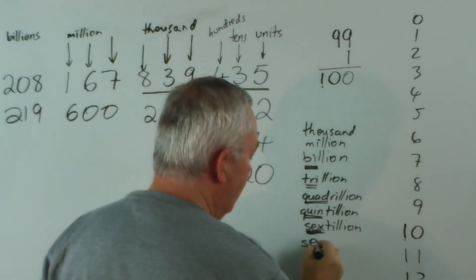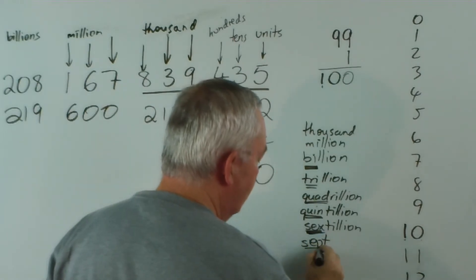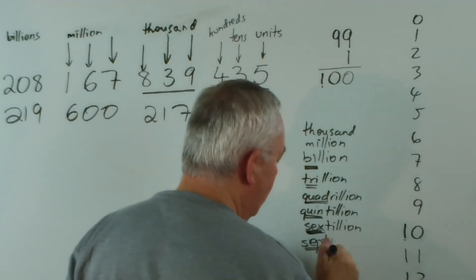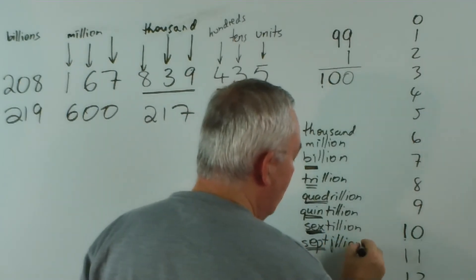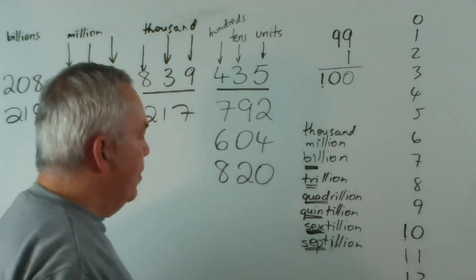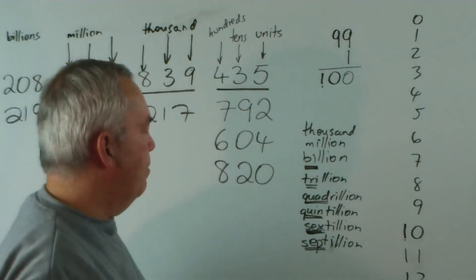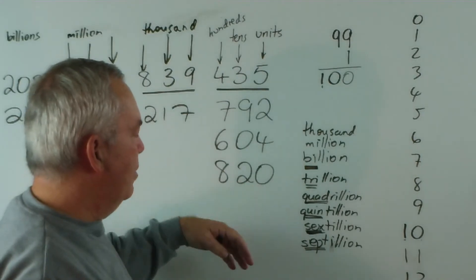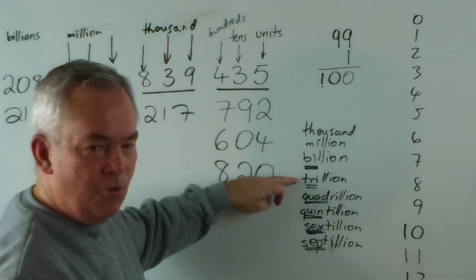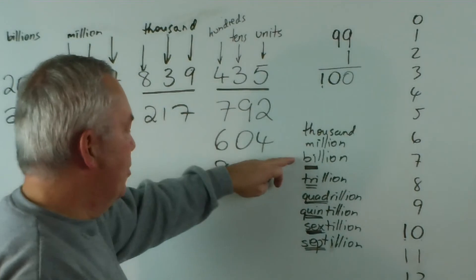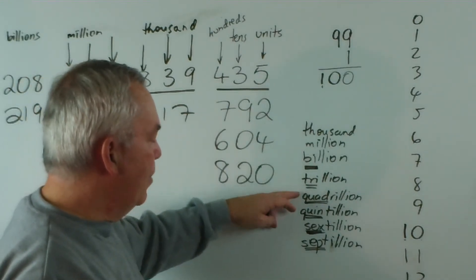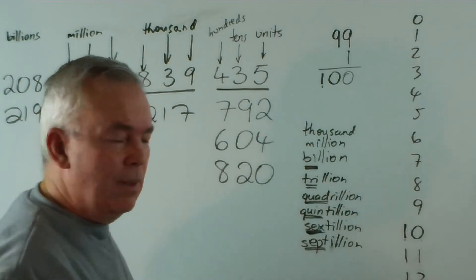And sept, we're into Latin still. Sept is seven. Septillion. And the list would go on. You can look these up on the internet. But quite honestly, at the moment, most figures, if you're talking about national debts and things, you might get up to trillions. The world's population is in billions. There's really no need for most things to go up into this field.